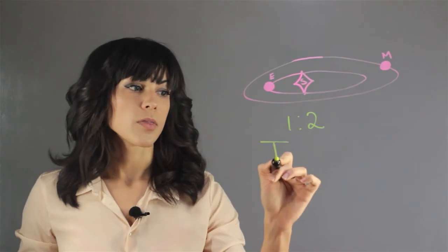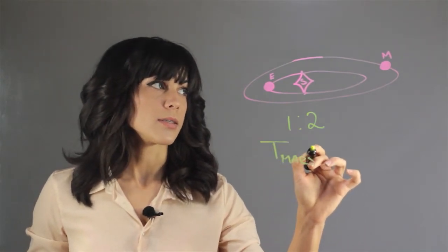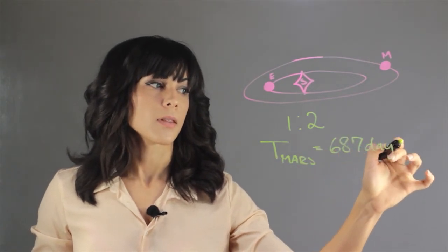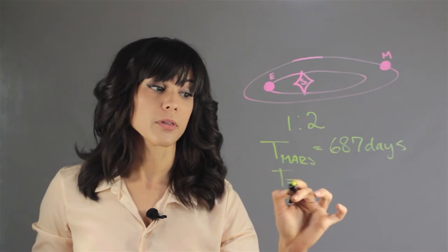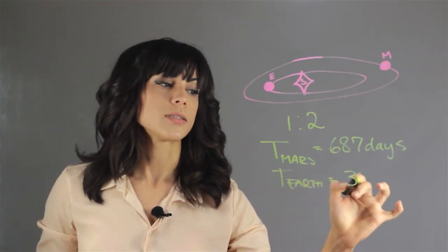Now the orbital period of Mars is equal to 687 days and the orbital period of the Earth is equal to 365 days.